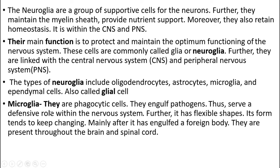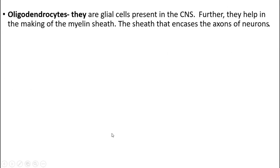First we will see microglia. They are phagocytic cells that engulf pathogens, serving a defensive role within the nervous system. They have a flexible shape, and their form tends to keep changing — mainly after engulfing a foreign body. They are present throughout the brain and spinal cord.